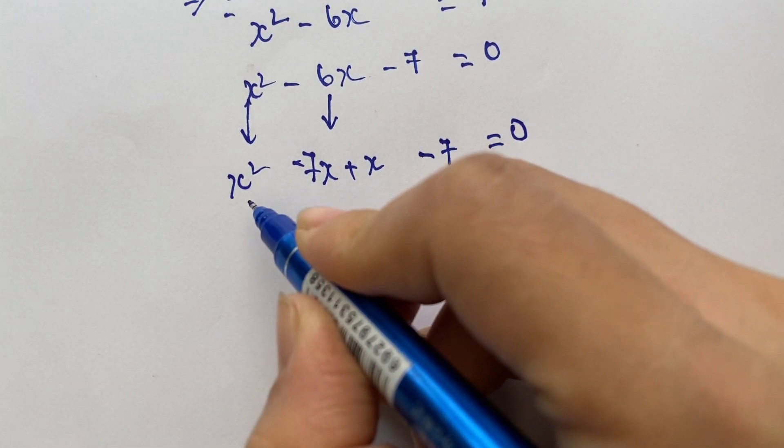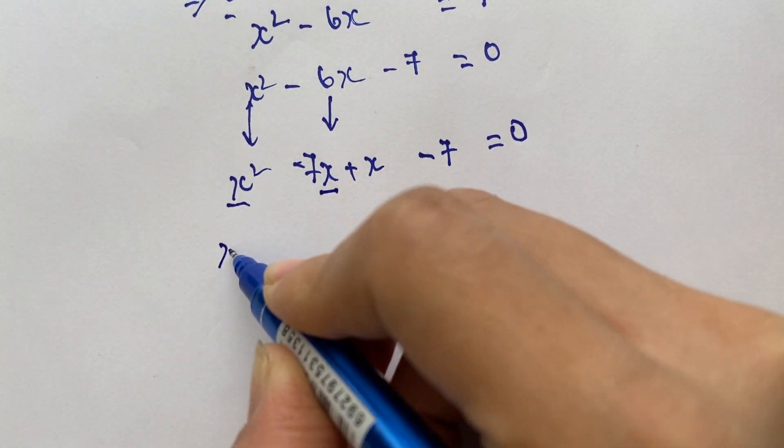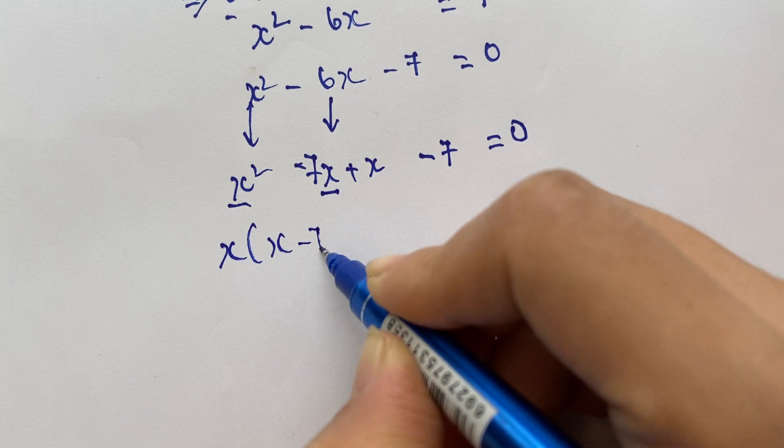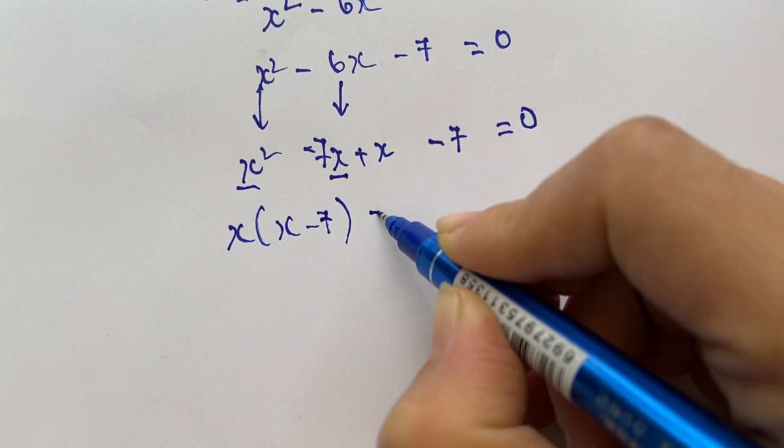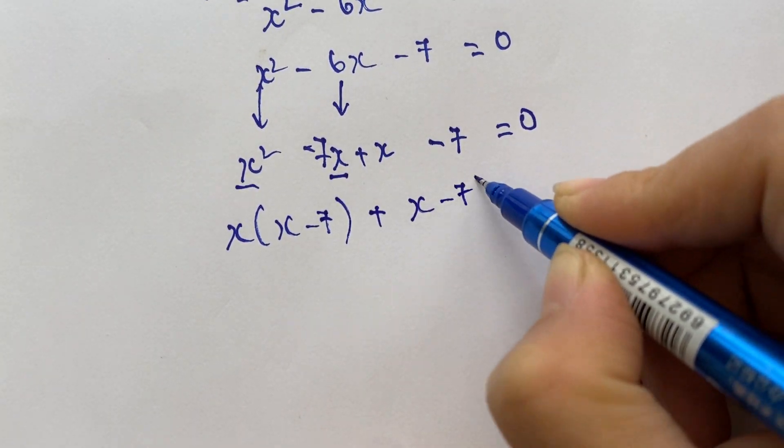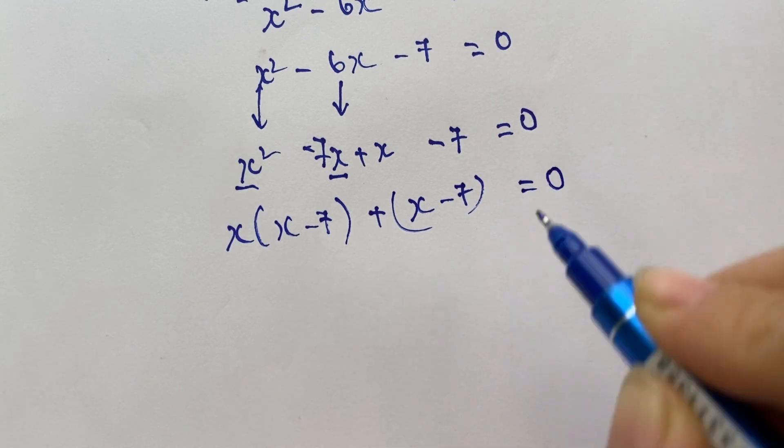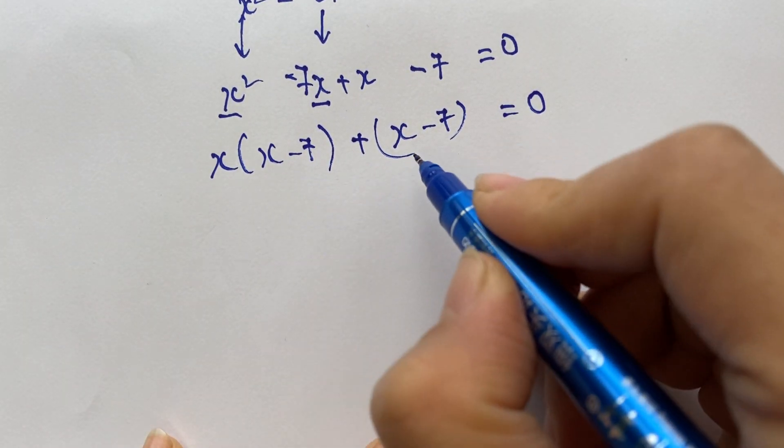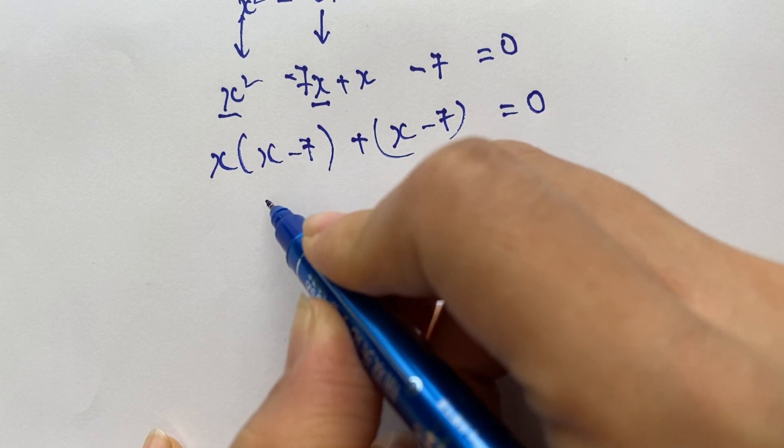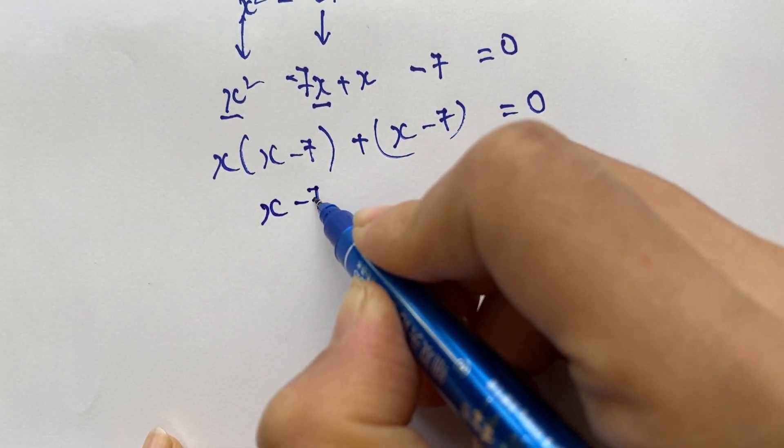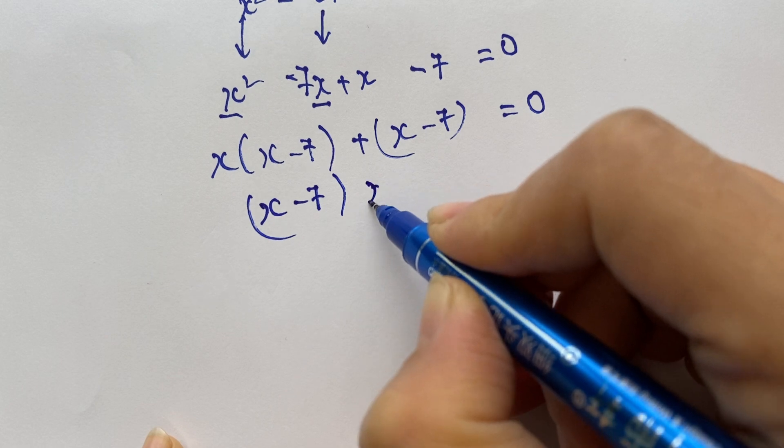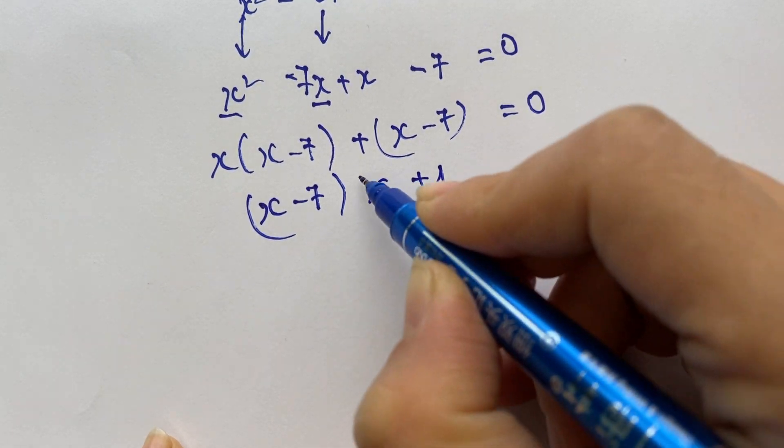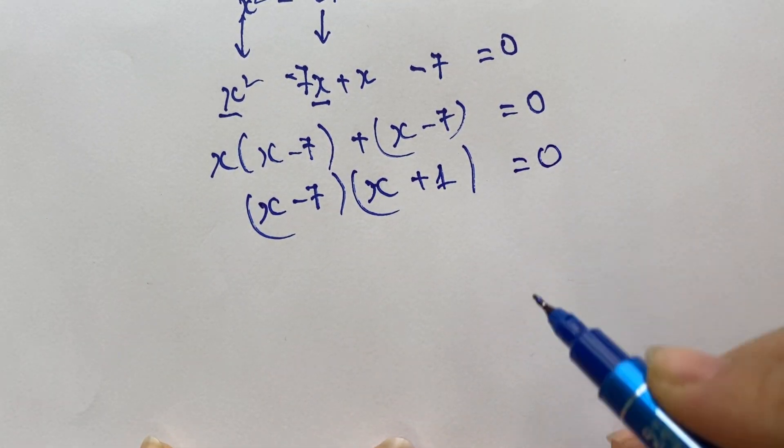Factor using the common factor method: x times (x minus 7) plus (x minus 7), which gives (x minus 7)(x plus 1) equals 0.